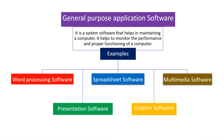General purpose application software helps to monitor the performance and proper functioning of a computer. Some examples are word processing software such as MS Word, spreadsheet software such as MS Excel, multimedia software, presentation software such as MS PowerPoint, graphics software, and many more.